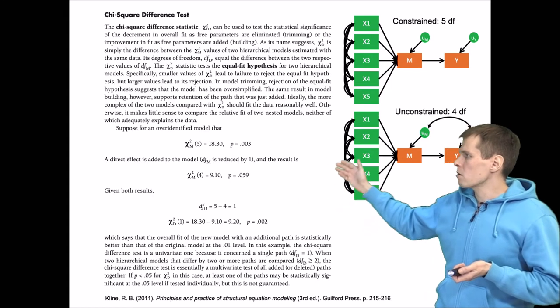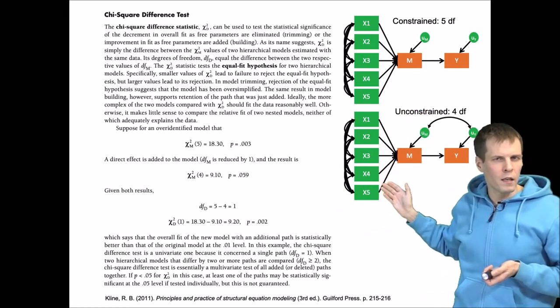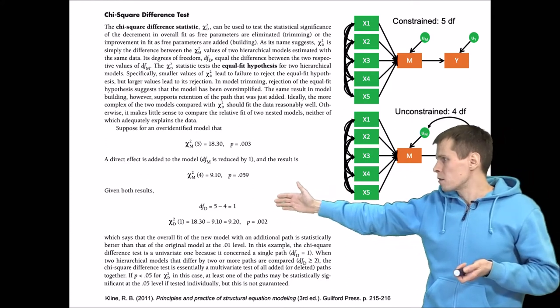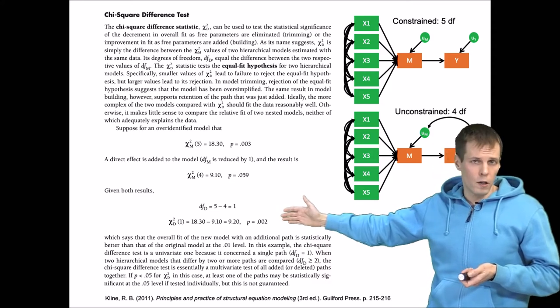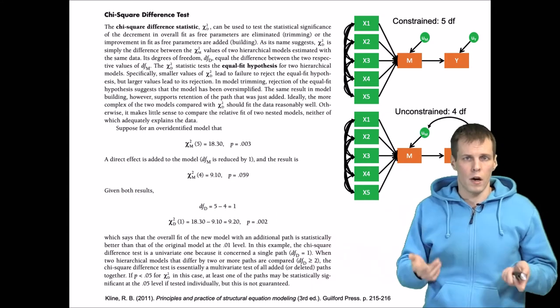These models have a chi-square of 0.03 and this one has 0.59. The degrees of freedom difference is one, chi-square difference is 9.2, and getting that kind of difference by chance only would be very unlikely according to the chi-square one distribution.